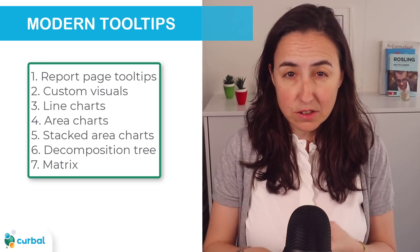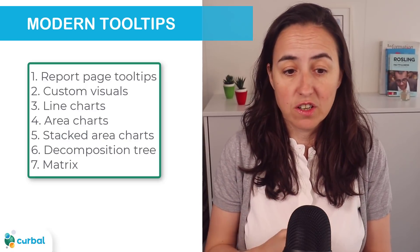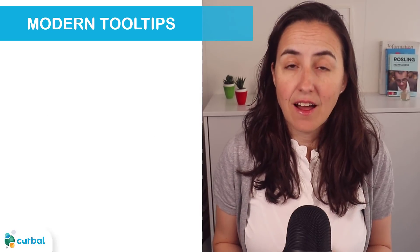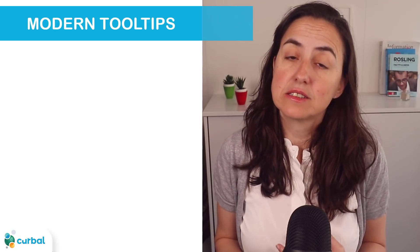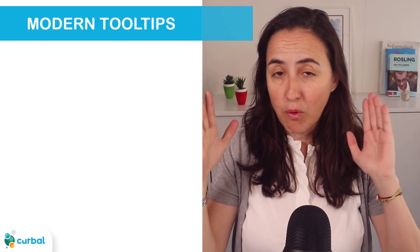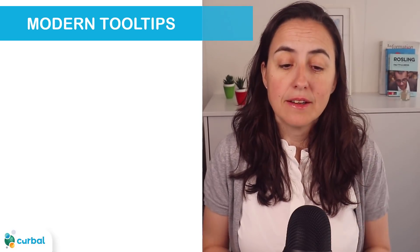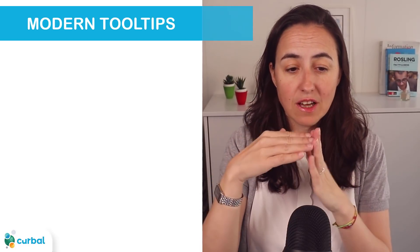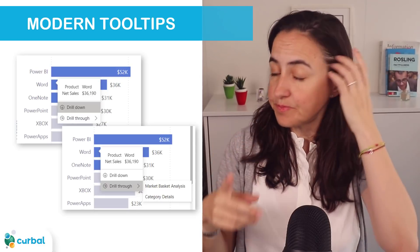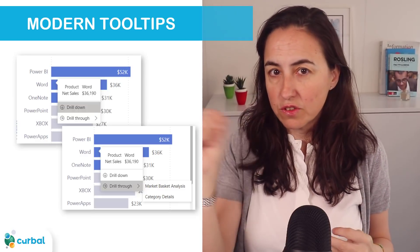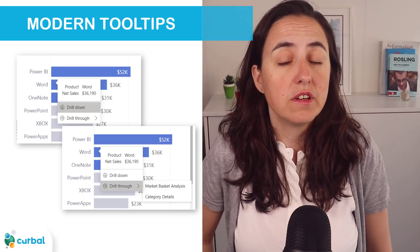Not all visuals are included yet — report page tooltips, custom visuals, line charts, area charts, stacked charts, the decomposition tree, and the matrix are not supported yet. The biggest limitation for me is that you cannot granularly control it: you can turn it on or off for the entire report but not for specific visuals. That is something I really liked about the old tooltips, so I'll wait. The new tooltips do have drill down and drill through, which is great.